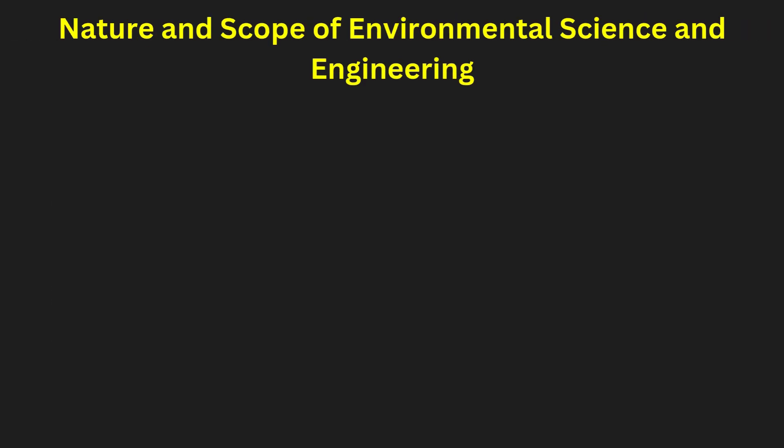Nature and scope of environmental science and engineering. Environmental science integrates biology, chemistry, physics, and engineering to study ecological processes and human impacts. It addresses pollution control, resource management, and sustainability. Environmental engineers develop solutions for air and water treatment, waste management, and renewable energy. The field contributes to climate change mitigation and disaster resilience. Research leads to innovative green technologies. Laws and policies regulate industrial and urban environmental impacts. Education and public awareness promote conservation. Engineers collaborate with policymakers for sustainable urban and industrial development. Interdisciplinary approaches enhance environmental problem-solving, advancing environmental science for a healthier planet.